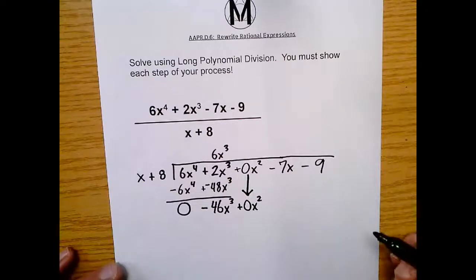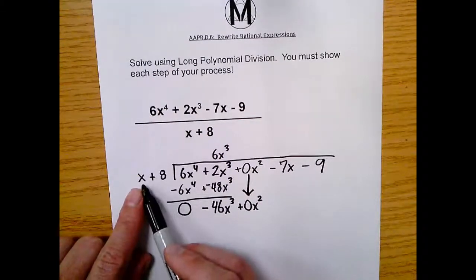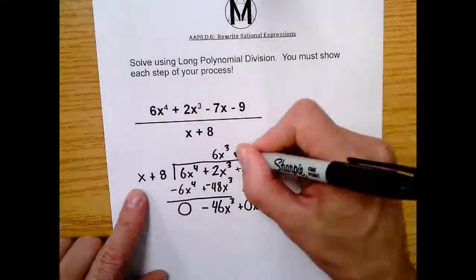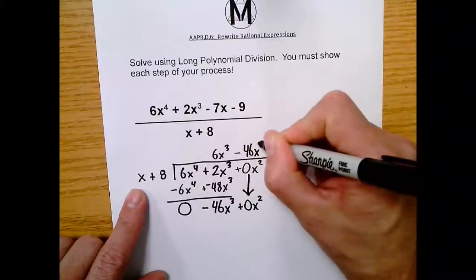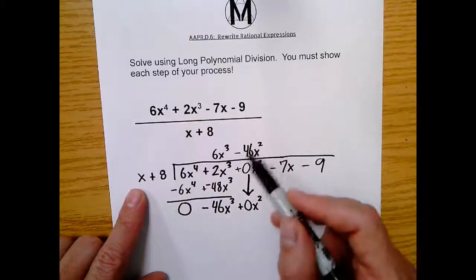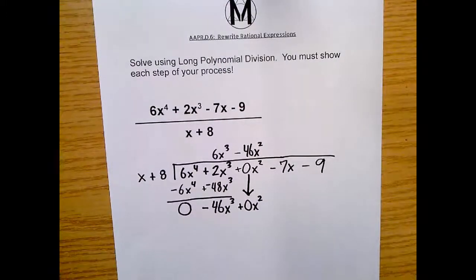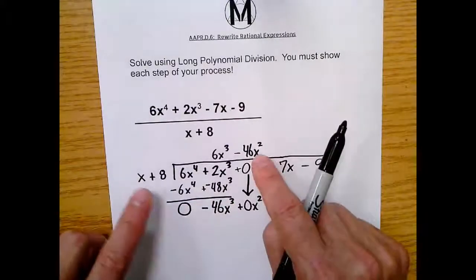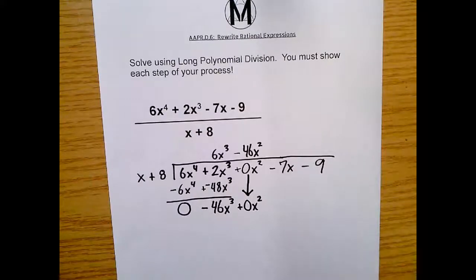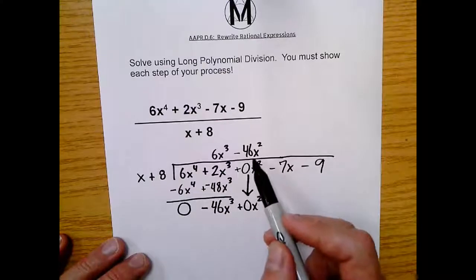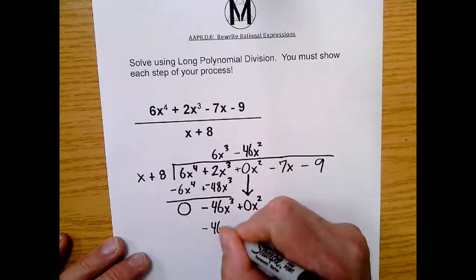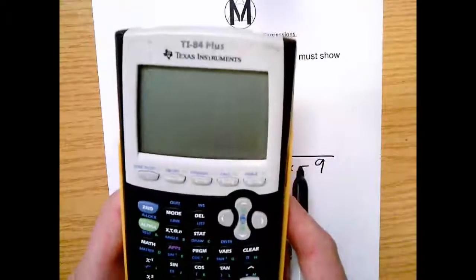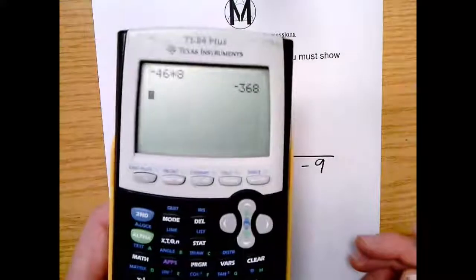Now what we do is we just repeat that process. So the next question is, what does this x have to multiply by to become negative 46x to the third? We multiply this x by negative 46x to the second. That's how you get the second term in your quotient. Your quotient is the answer to a division problem. Step two, we multiply it back down. We're going to take this times x and then this times 8. Negative 46x squared times x is negative 46x to the third. And then negative 46 times 8. I don't know that off the top of my head. So we're going to say negative 46 times 8 is negative 368.